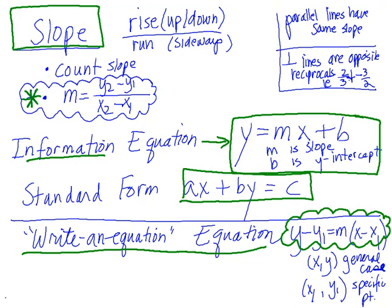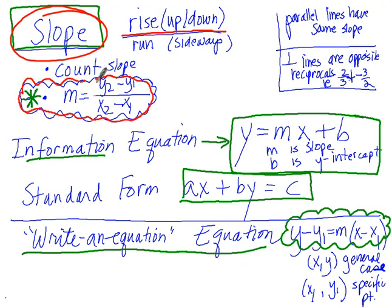We have slope, we learned yesterday in 3.4, it's rise over run, and you can count it out on a graph, or you can use the slope formula, which is right here. Either way works.